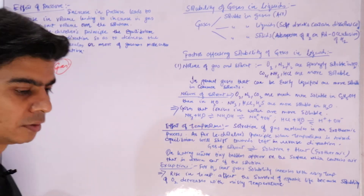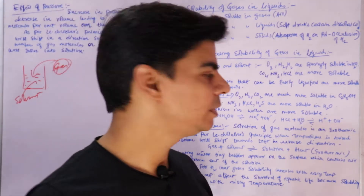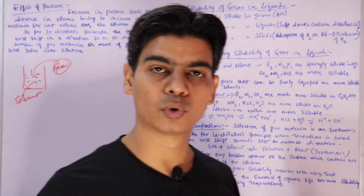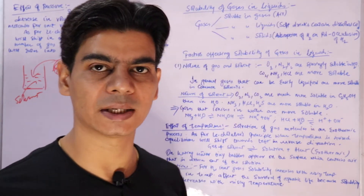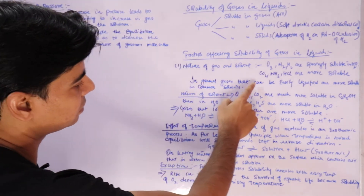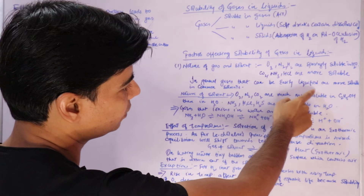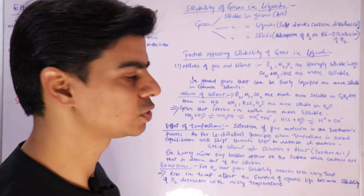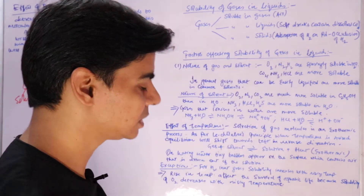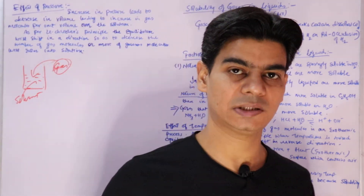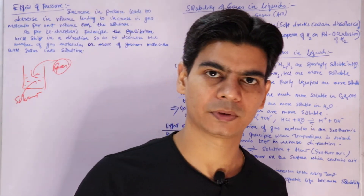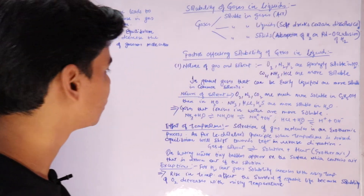In general, gases that can be easily liquefied are more soluble compared to other gases which cannot be easily liquefied. So the nature of a gas — specifically, whether it can be easily liquefied — determines how soluble it is in common solvents.